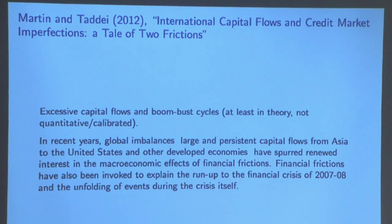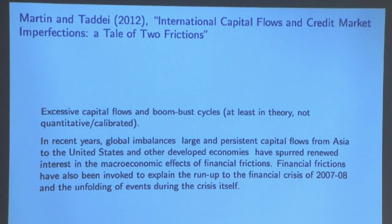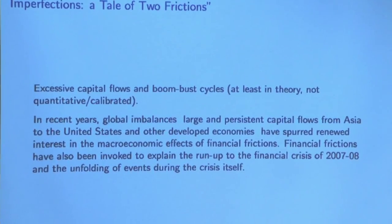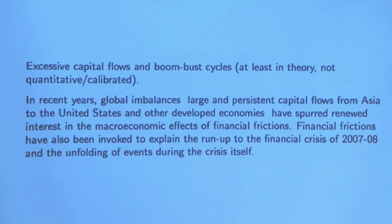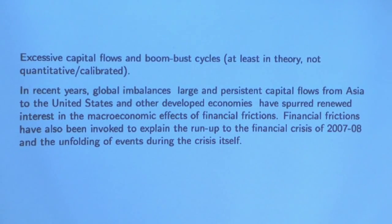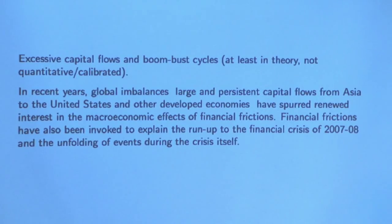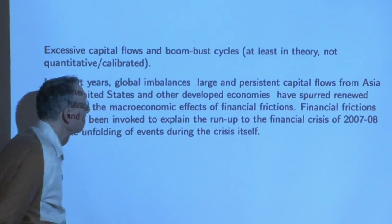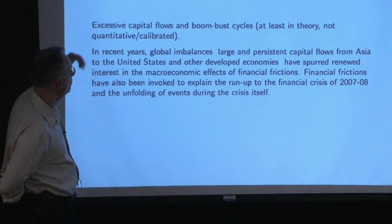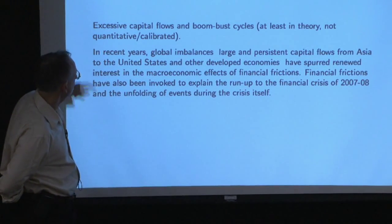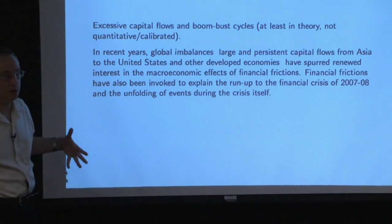There's one other paper to discuss before getting to the main paper of this lecture. It's called 'International Capital Flows and Credit Markets: A Tale of Two Frictions.' The idea is that we see a lot of capital moving around the world and boom-bust cycles, and the paper tries to get both into one model. It's ambitious. Global imbalances — large and persistent capital flows out of Asia to the US — relate to financial friction making it hard to use capital productively within China.